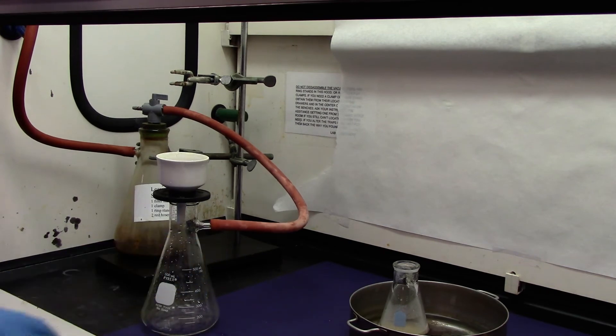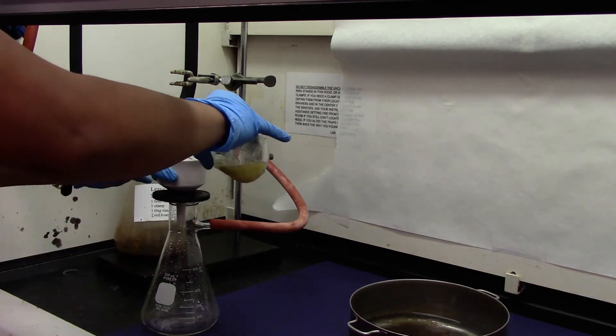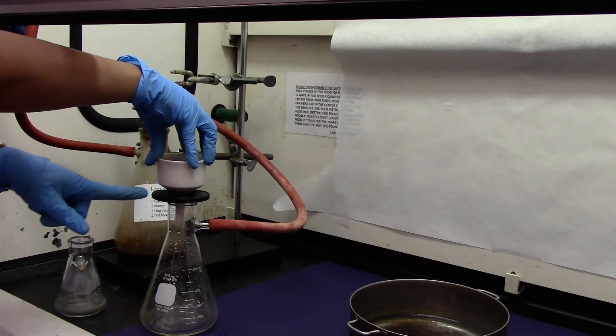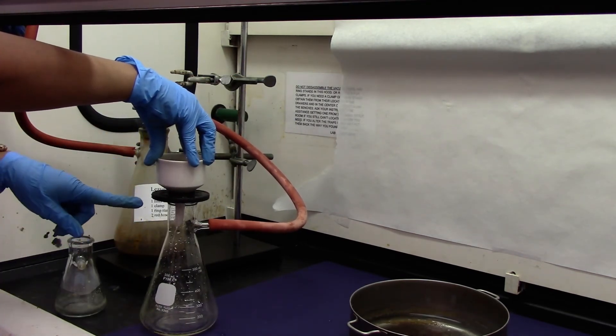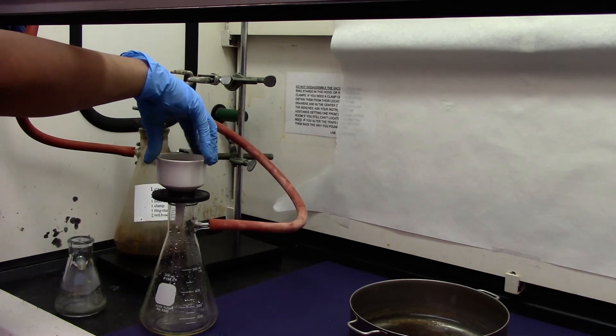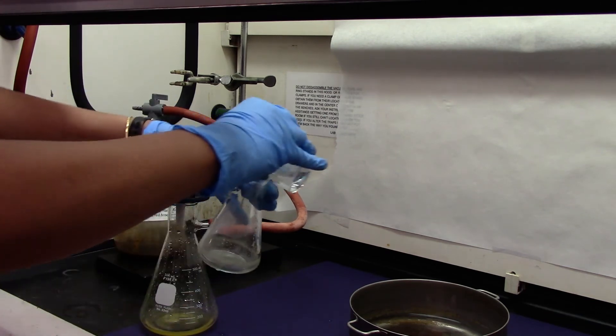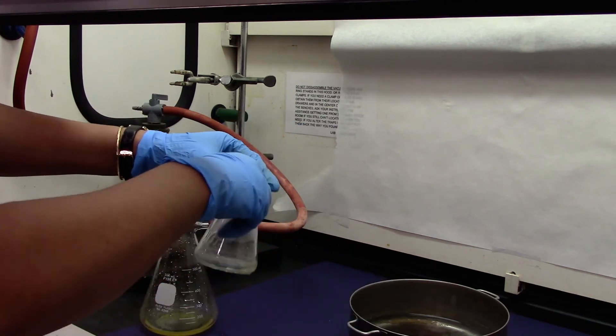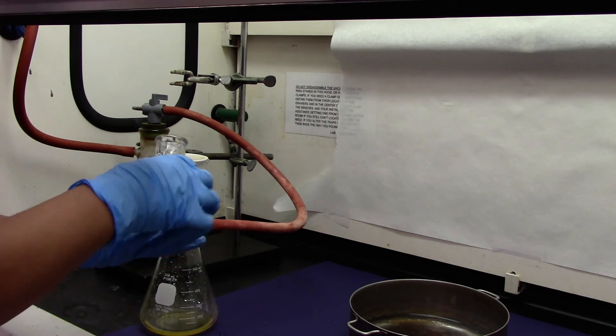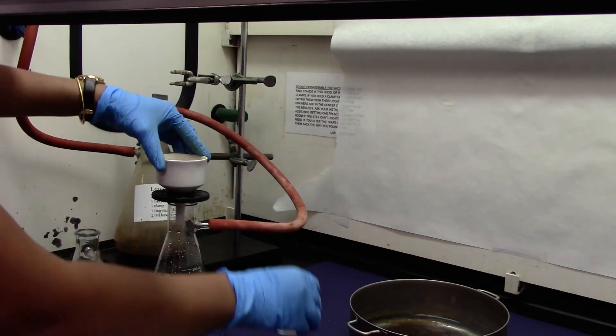Turn on the vacuum and then transfer your product solution. If you press the funnel for a few seconds it will seal and the filtration will be fast. We can rinse the flask with some cold DI water and rinse our crystals.